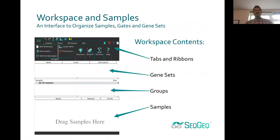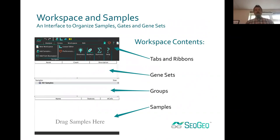Overview of what I'm going to be talking about today: starting with the SeatGeek workspace, the basic starting point of any analysis. If you're familiar with Flojo, it should look familiar. Essentially we have tabs, ribbons, and the gene sets area, which is a little different than what you'd normally see in Flojo — they're at the top of the workspace.